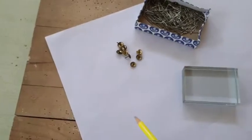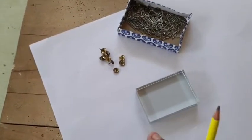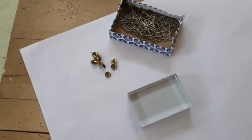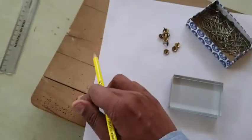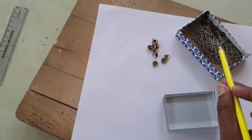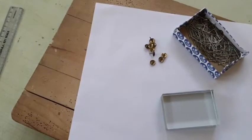Now before we place the rectangular glass slab on this sheet for further carrying out the experiment, first of all we need to fix this sheet on this drawing board with the help of the pins. So first of all let's do it.